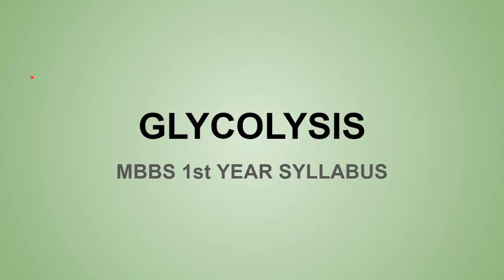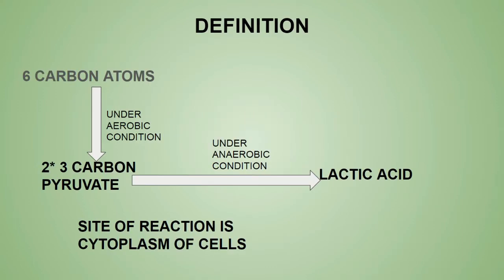Hello everyone, today we will discuss the glycolysis pathway of glucose metabolism. This glycolysis pathway is also known as the EMP or Embden-Meyerhoff pathway, named after the scientists who discovered it. The name 'glycolysis' itself tells us: 'glyco' means glucose and 'lysis' means breakdown.